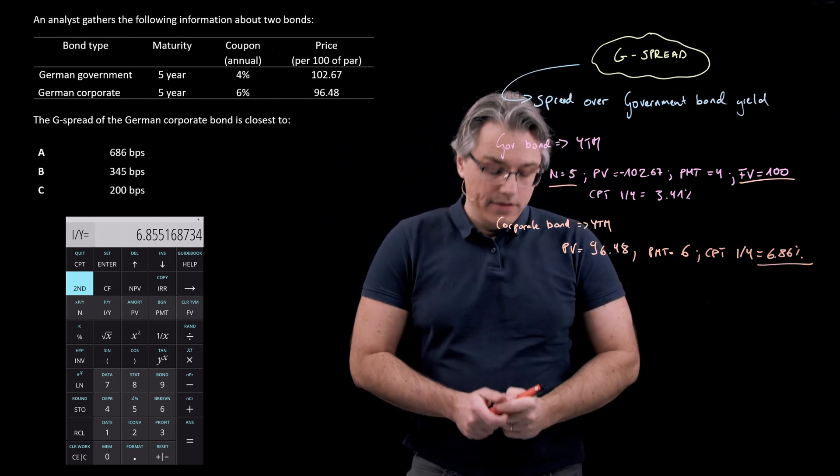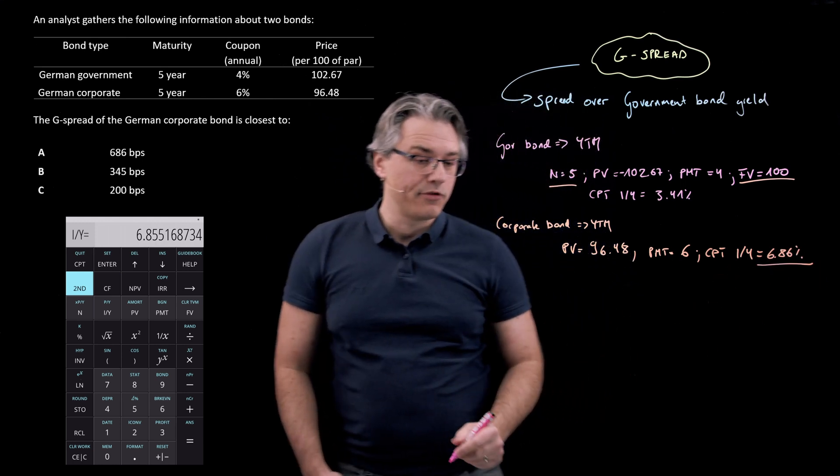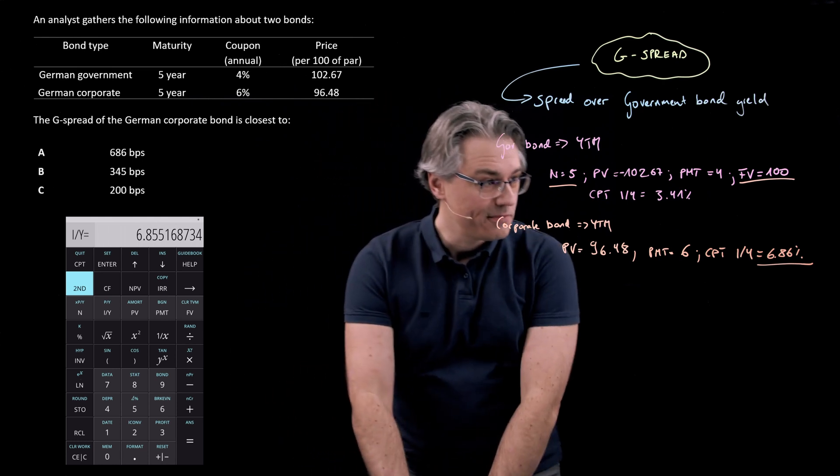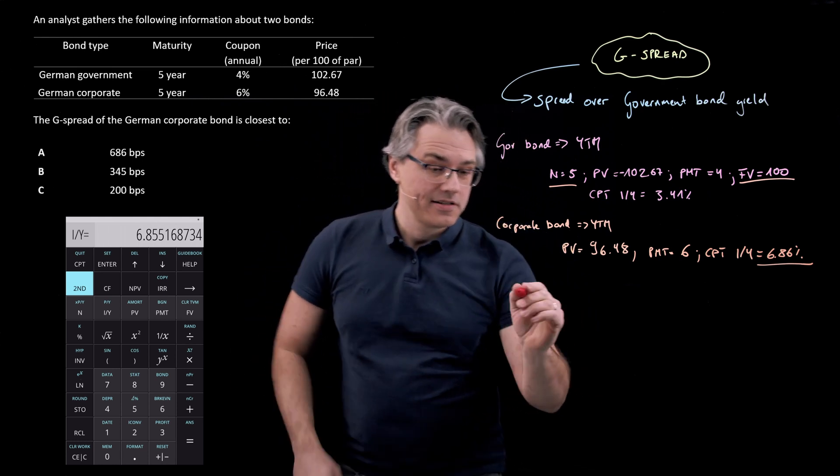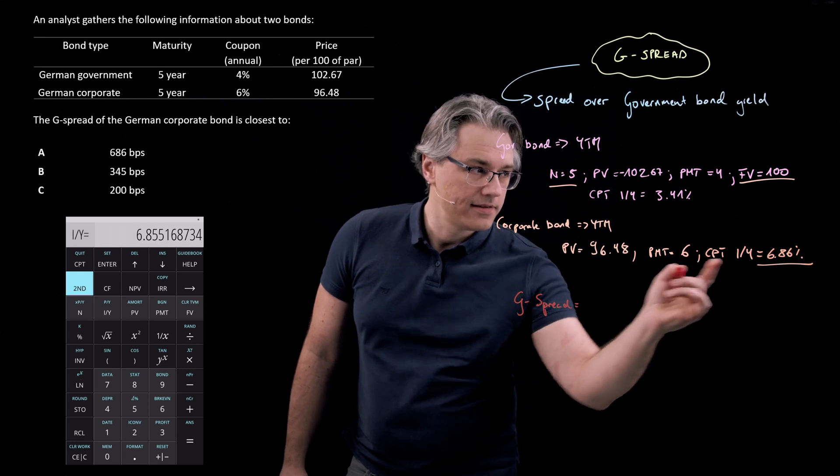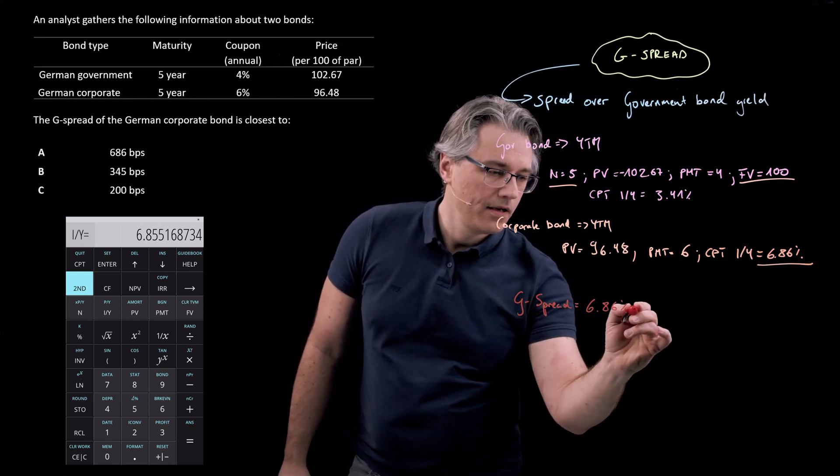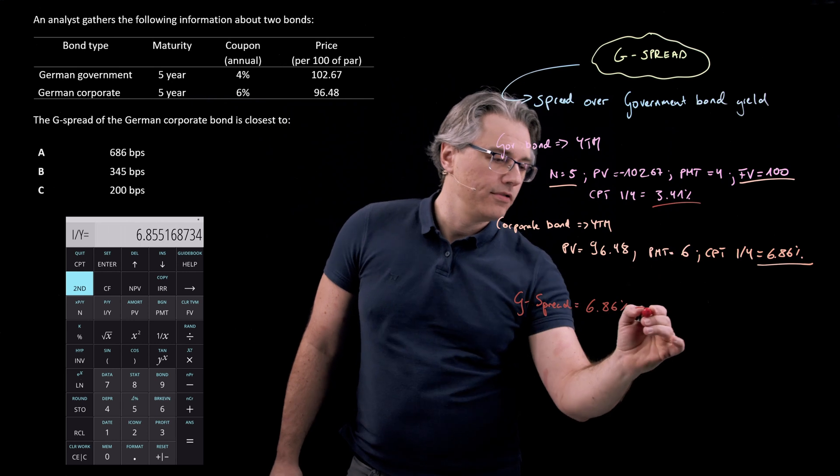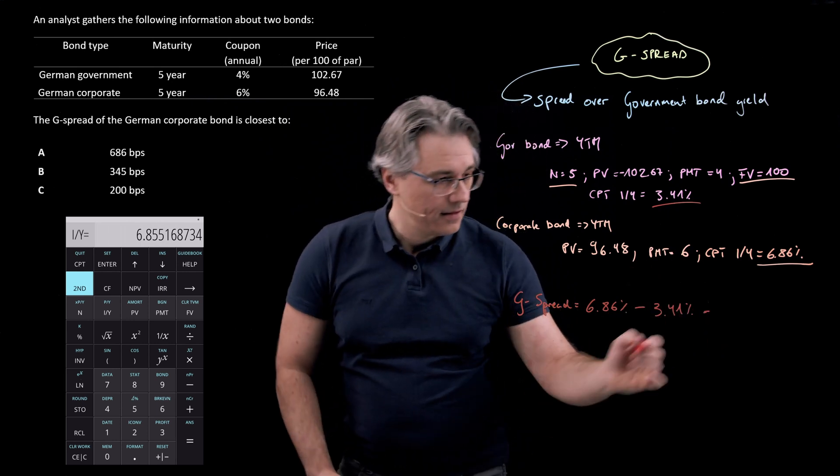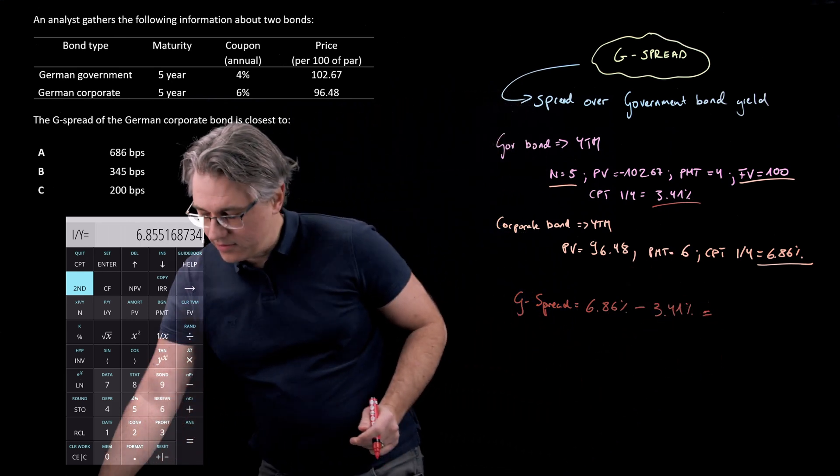In order to actually now get the G spread, we need to compute the difference between the two yields. So G spread is this 6.86% minus this 3.41. Let's see what it actually is.